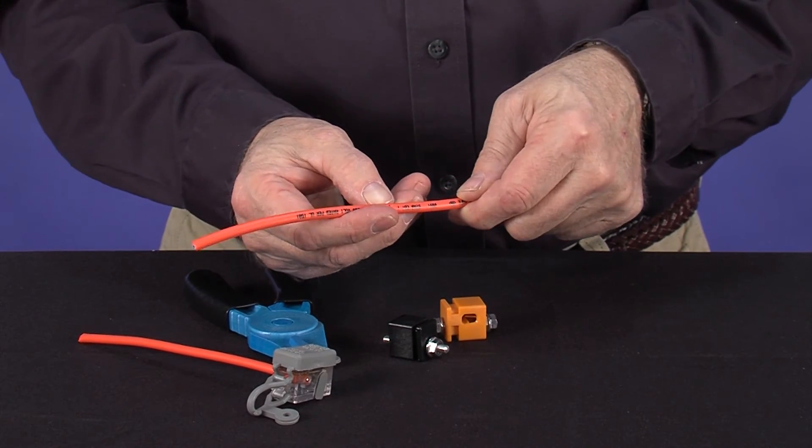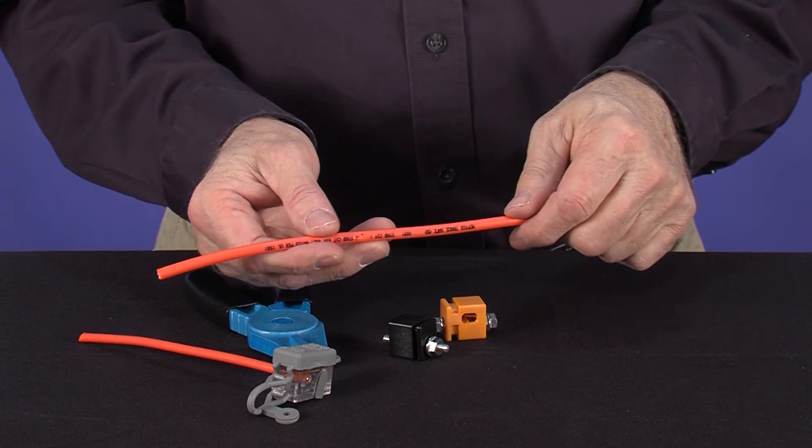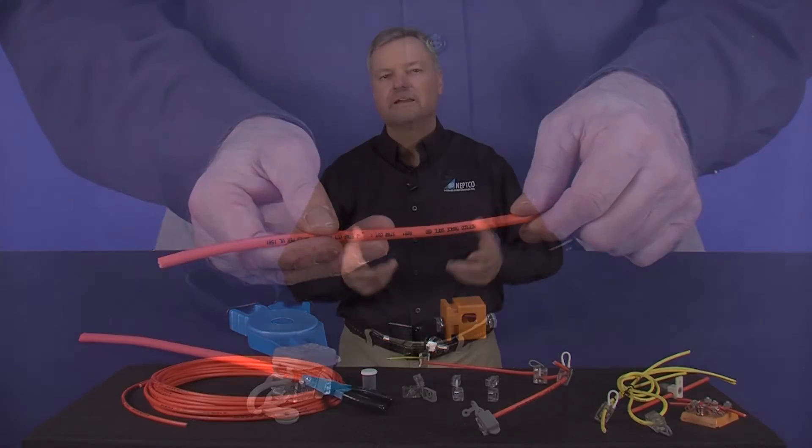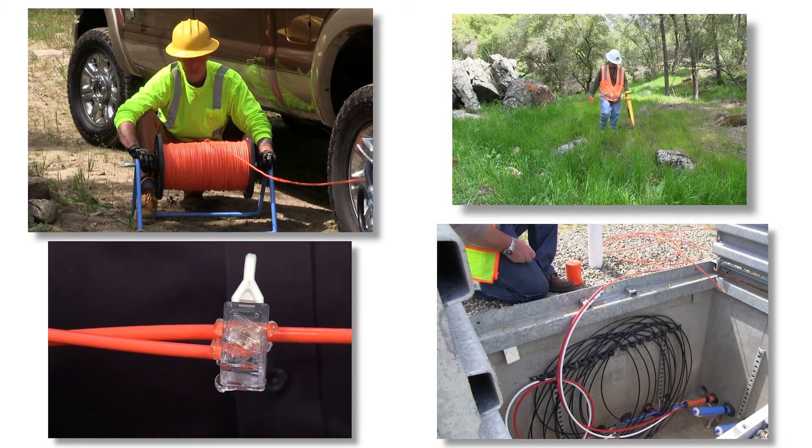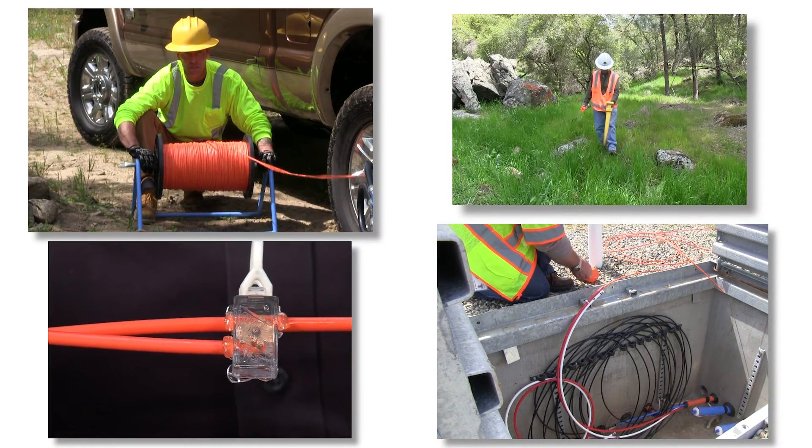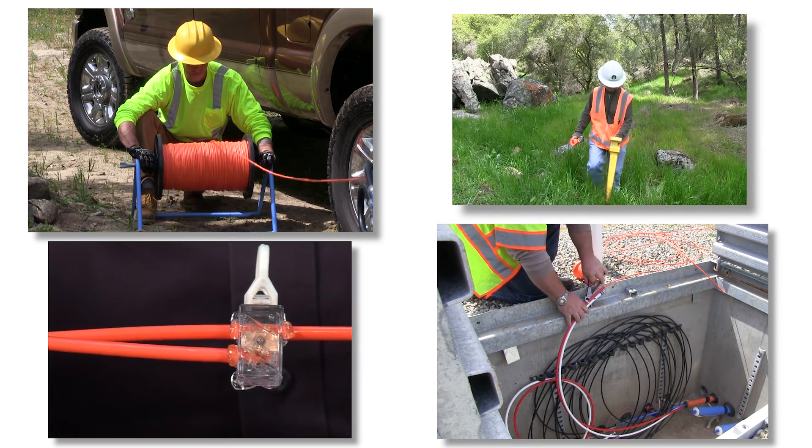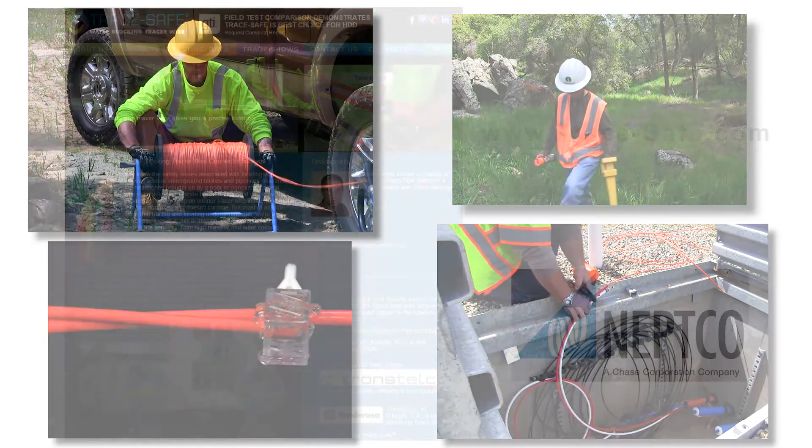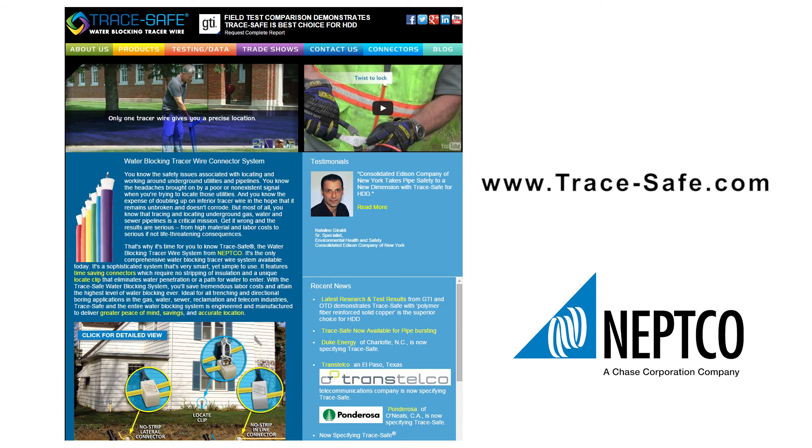No need to be concerned about the holes in the insulation. A water blocking component inside prevents any moisture from getting to the conductor. That concludes the TraceSafe locating system demonstration. Now you're ready to use TraceSafe and the connectors for practically any situation or application in the field. For more information including field test data, lightning strike testing, and videos, please visit TraceSafe.com. You'll also find information on the complete line of TraceSafe accessories and equipment.